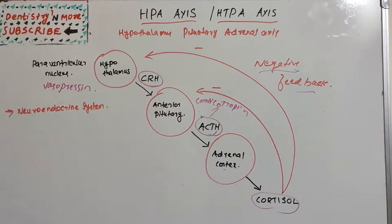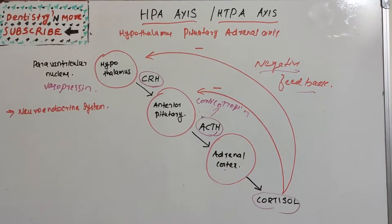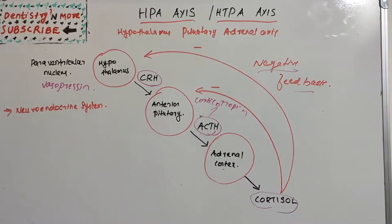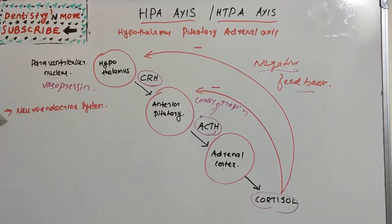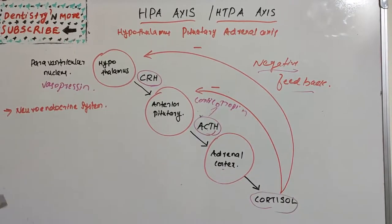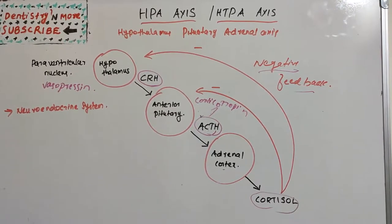The HPA axis is influenced by physical activity, illness, blood levels of cortisol, and the sleep-wake cycle, known as circadian rhythm. The HPA axis has a central role in regulating many homeostatic systems in the body, such as the metabolic system, cardiovascular system, immune system, reproductive system, and central nervous system. Basically, the HPA axis integrates physical and psychosocial influences to allow an organism to adapt effectively to its environment.